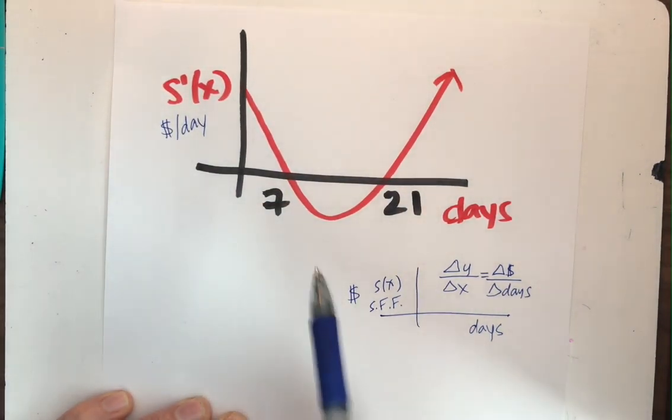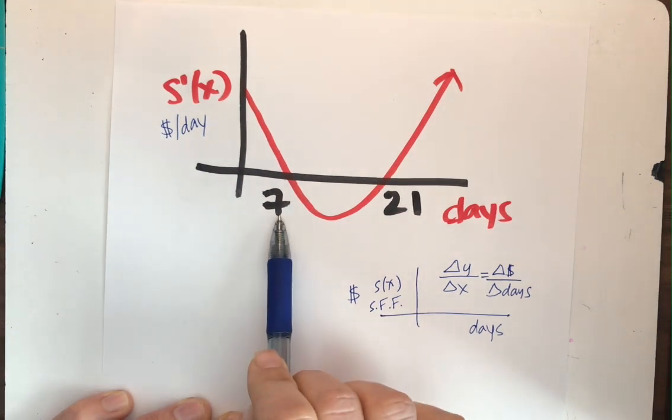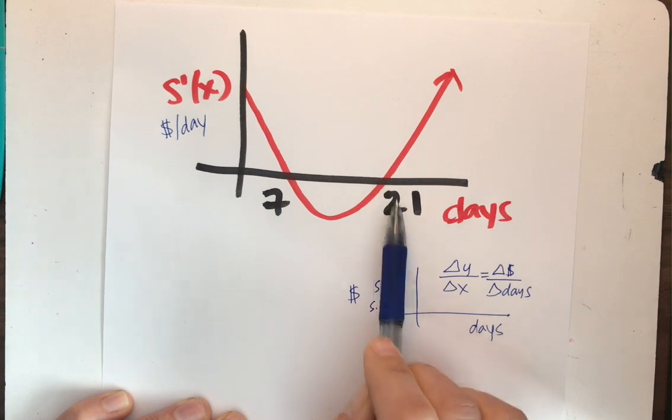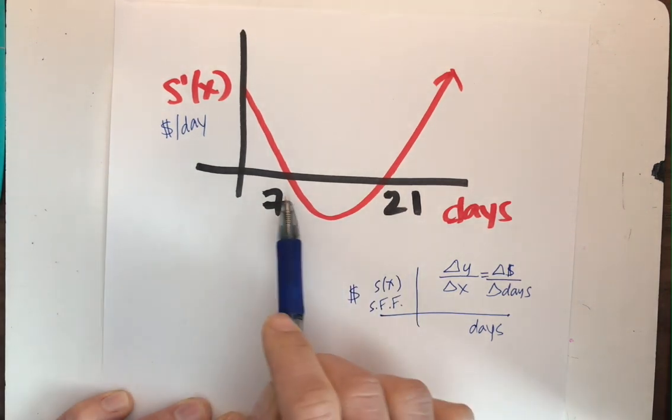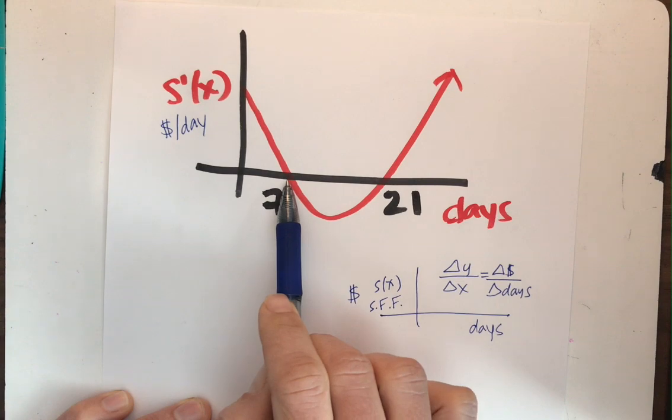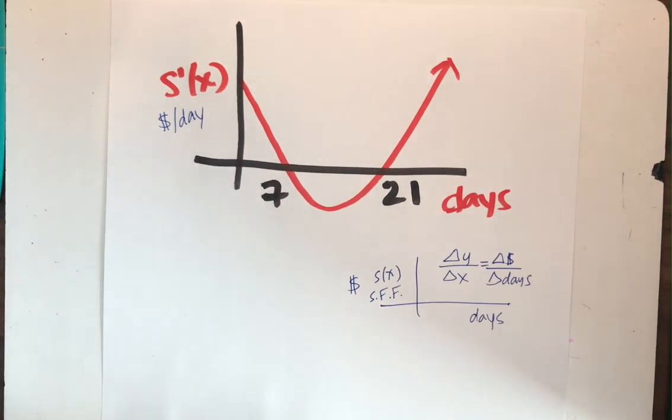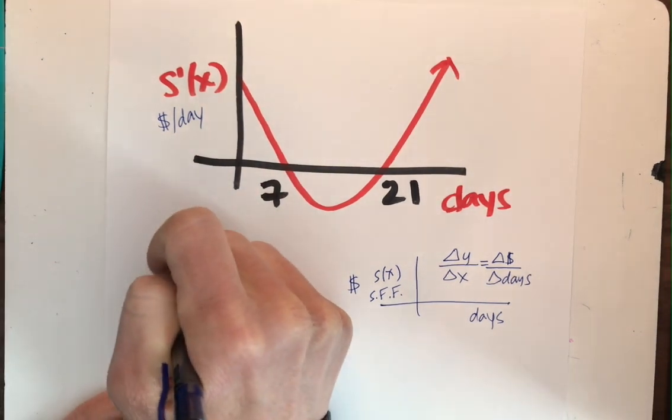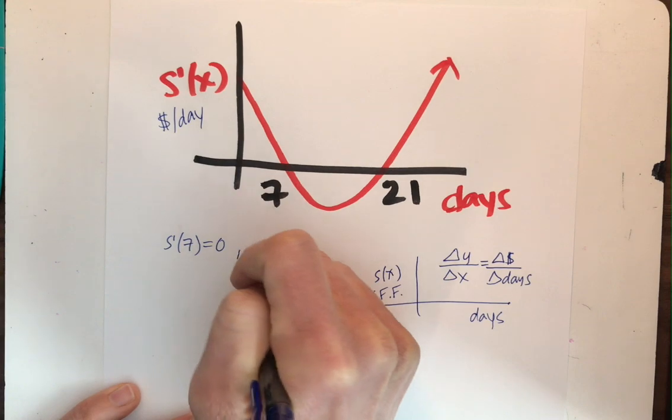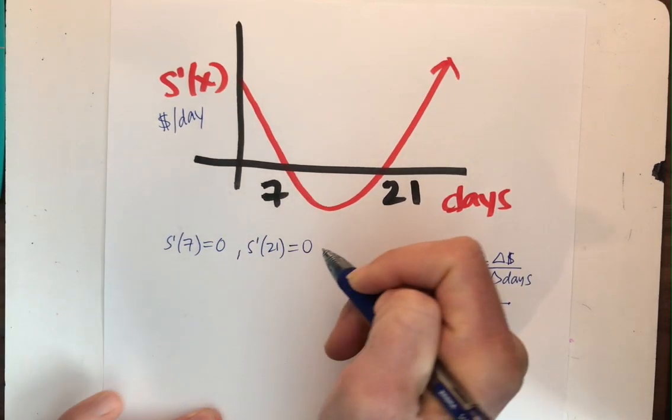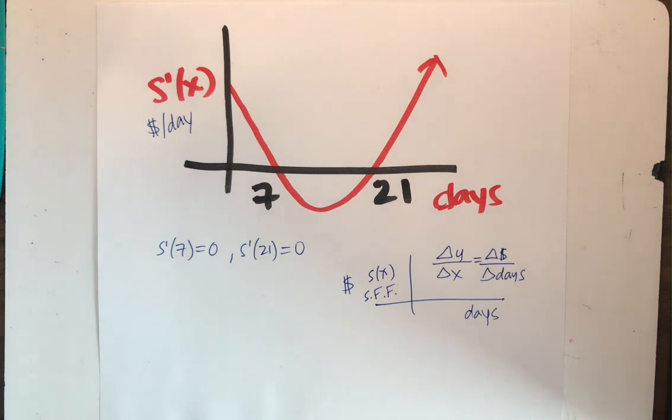Now on the graph, I just kind of guesstimated that this X intercept is 7. And I think it's kind of marked on the graph that this is 21. So if you said this was 8 or 7, that's fine. But just for our purposes to answer the rest of these questions, just please make note that I'm letting S prime of X be 0 on 7 and 21. So let's talk about that. S prime of 7 is 0. S prime of 21 is 0. So on the seventh day and the 21st day, my rate of change is 0. So the Sarah Fisher fund is not changing on those two days.